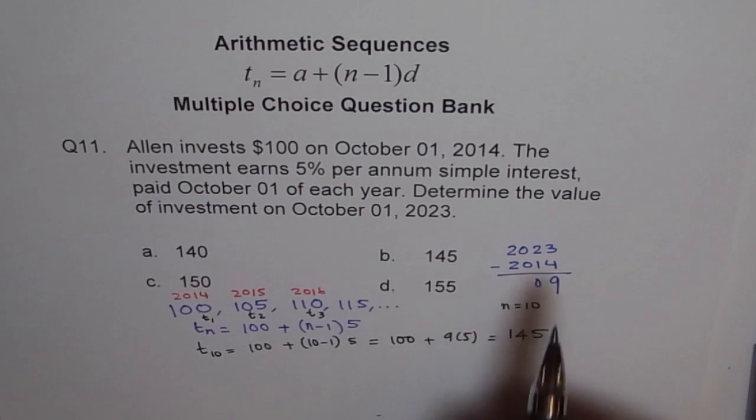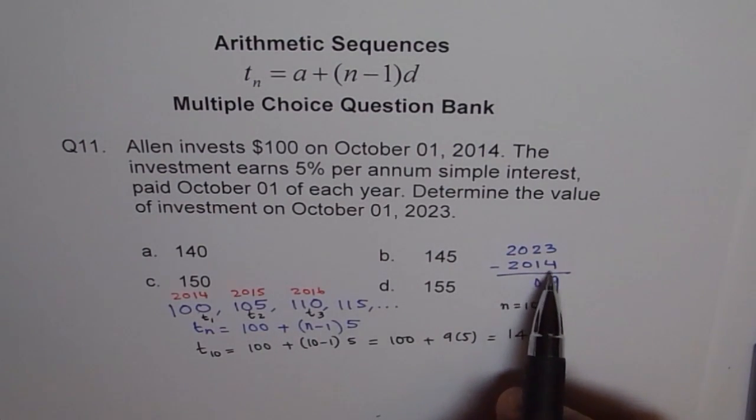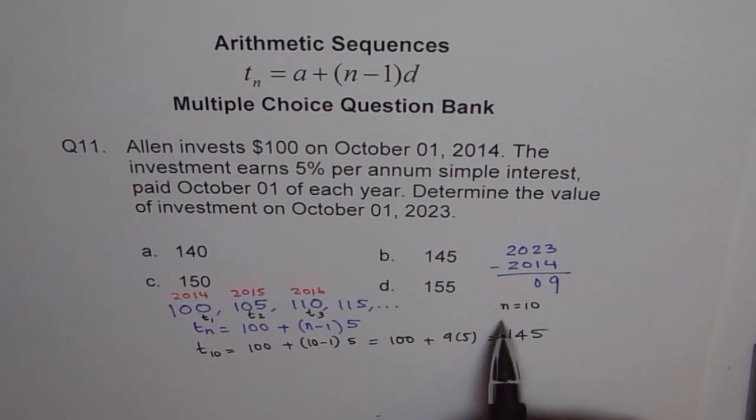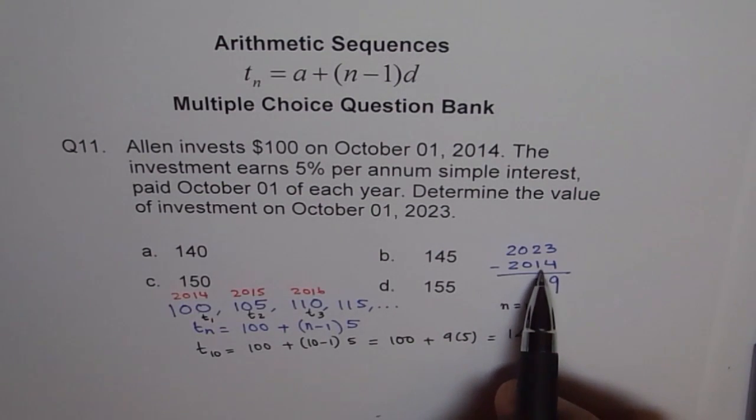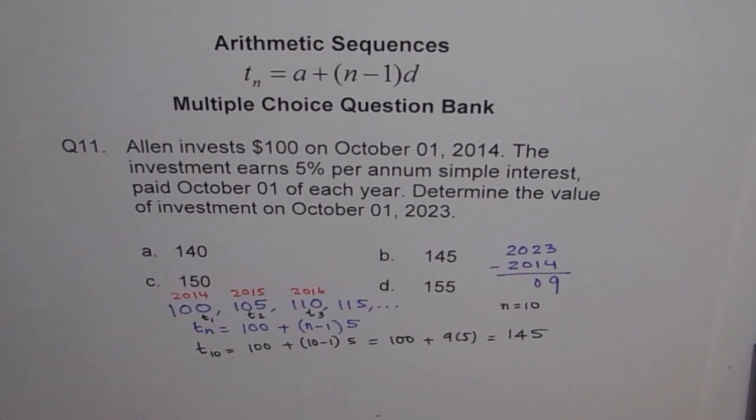Therefore, I brought to your notice that 2023 minus 2014 is 9, but that does not mean that N is 9. N is 10. Why? One more. Plus 1. Do you understand? Plus 1. So total number of years we are considering is 10 from 14 to 23. So that is how it is.